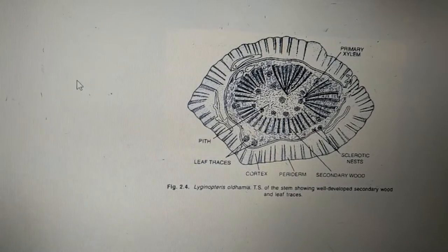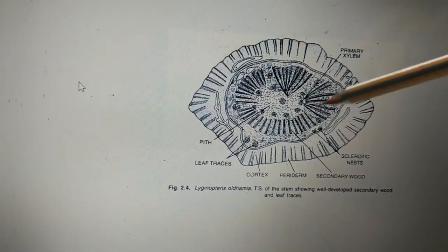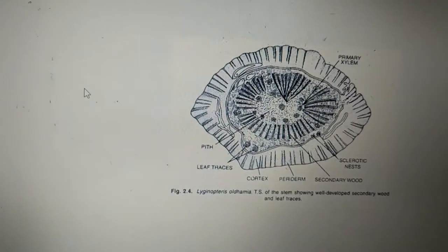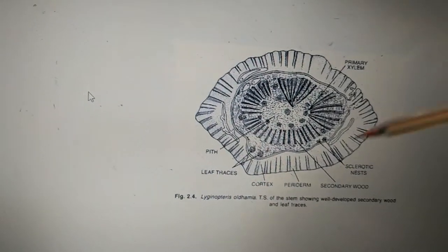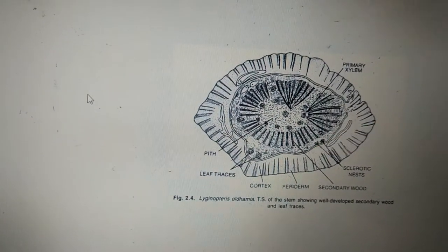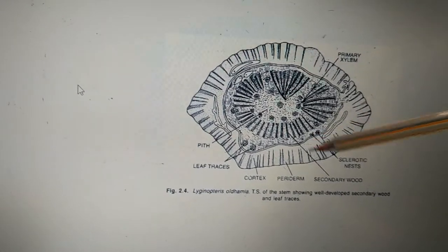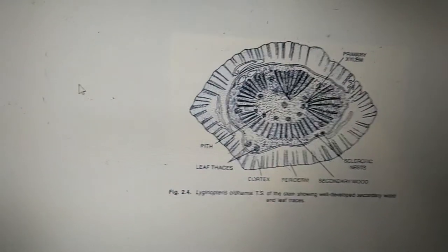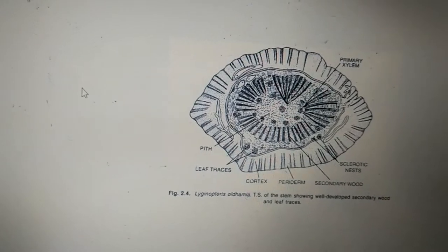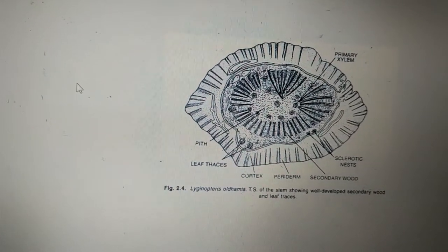This mesarch xylem are present inside this secondary wood, which indicates the presence of cambium. That's the reason it is showing secondary wood, indicating secondary growth. Secondary growth is nothing but the formation of woody stems. That's the reason even though it is a climber, it has got a woody stem.